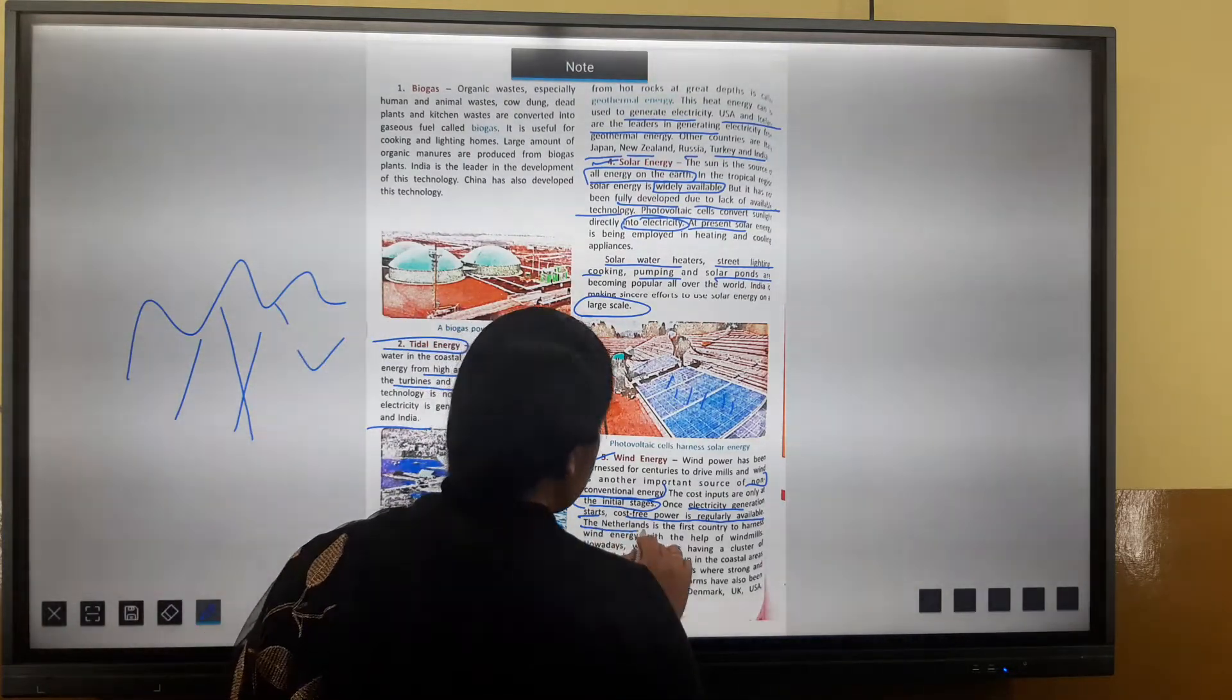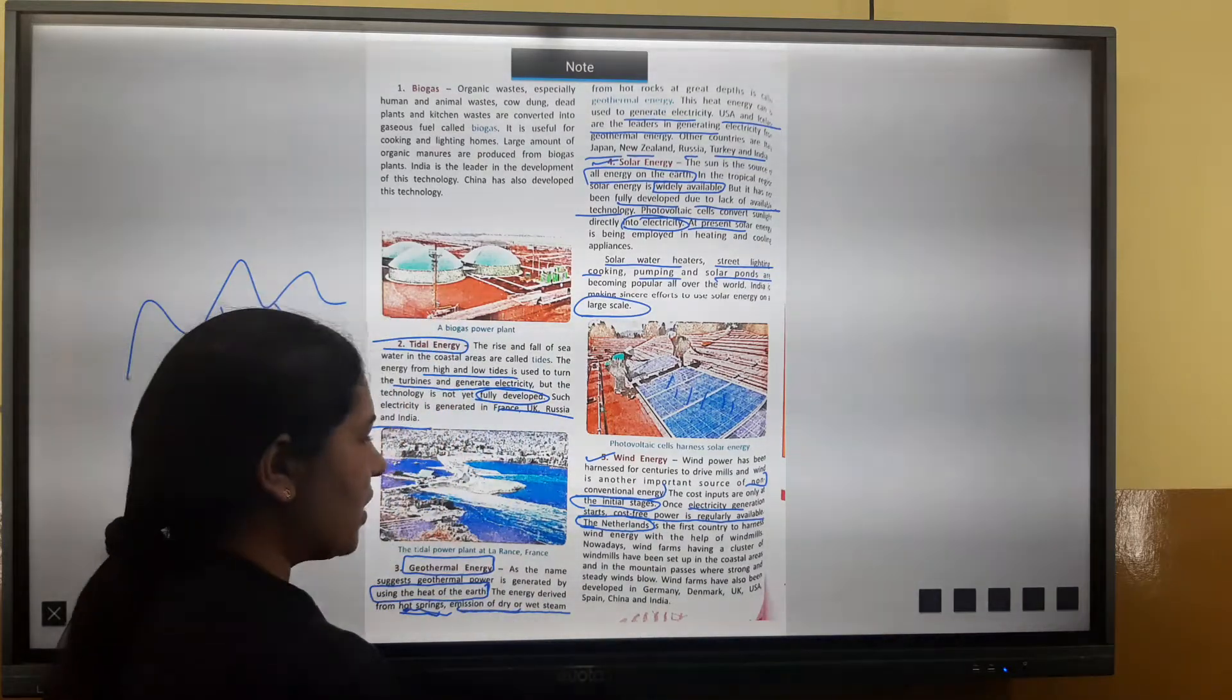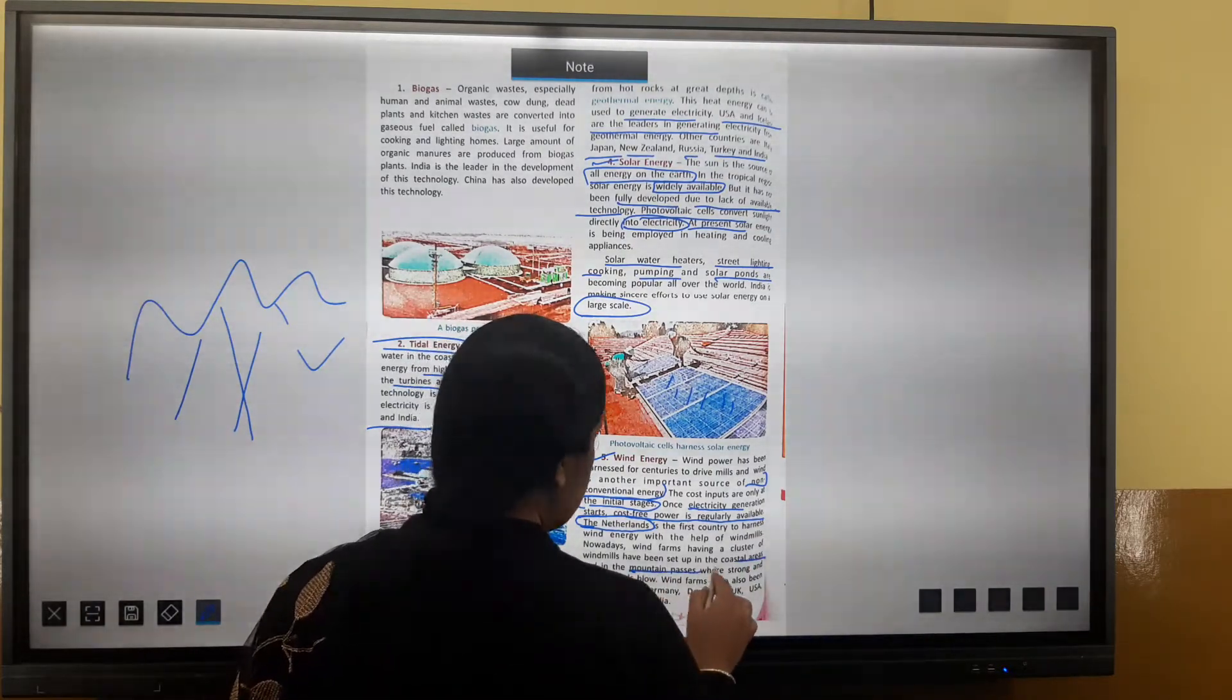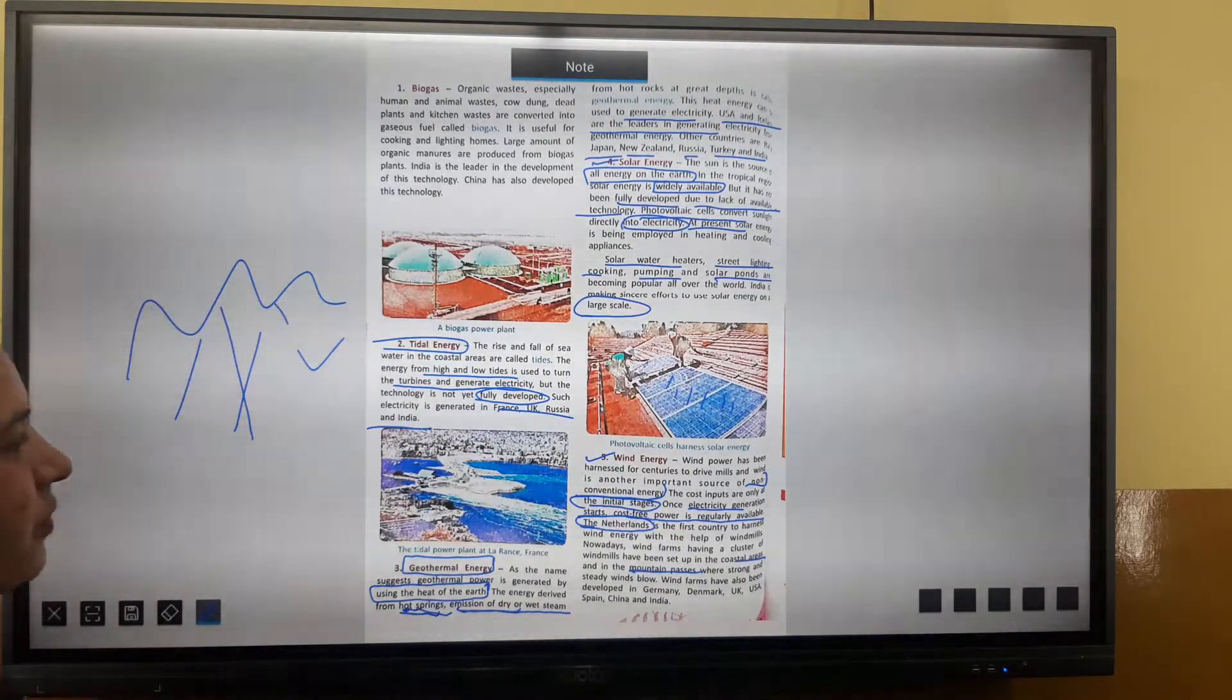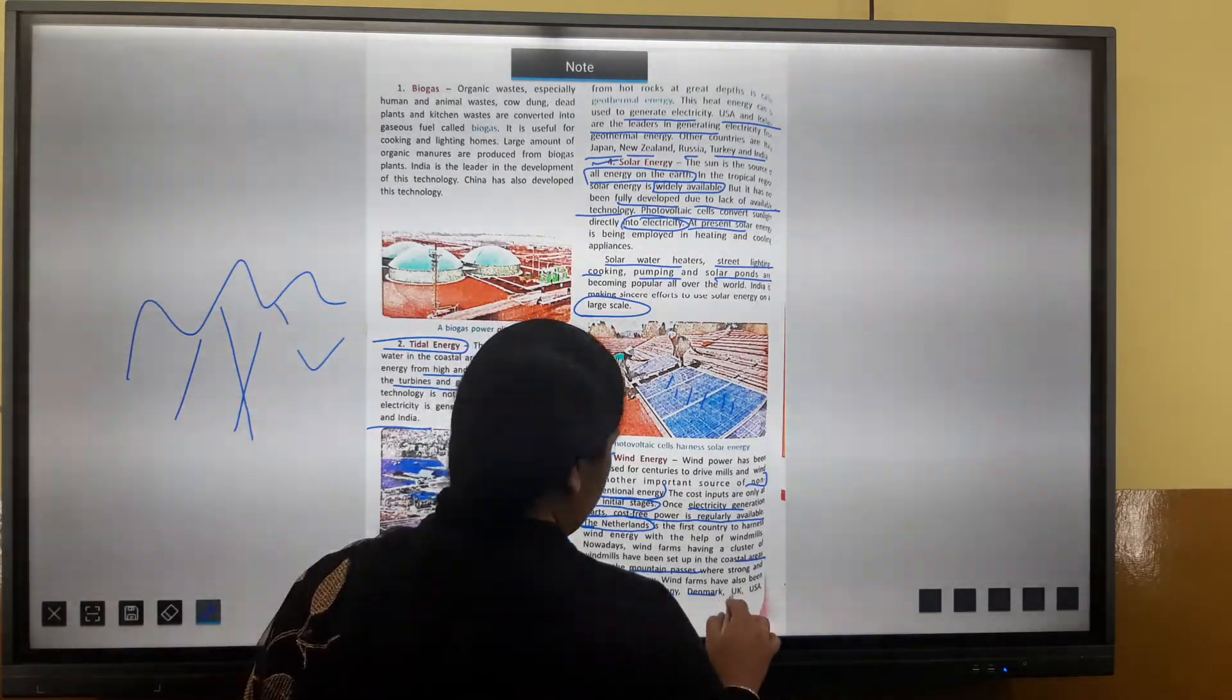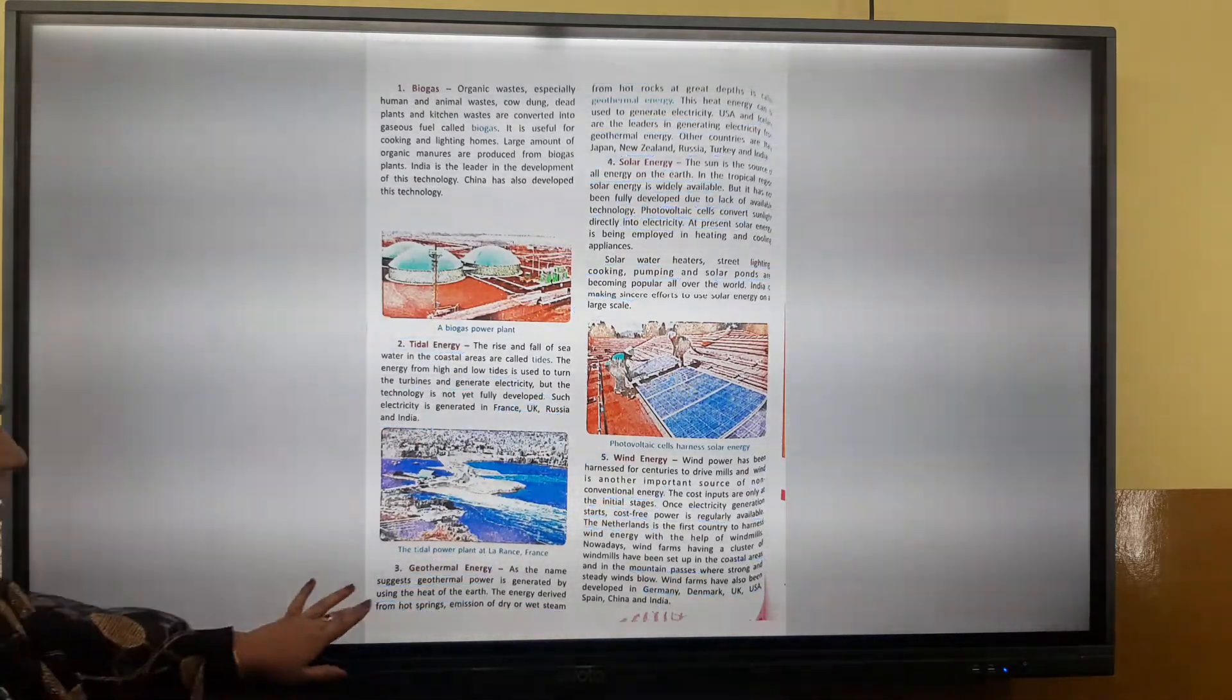Wind farms are set up in coastal areas and mountain passes which are wind energy sources. Wind farms are used in Germany, Denmark, UK, USA, China and India. In these areas, we have developed the technology.